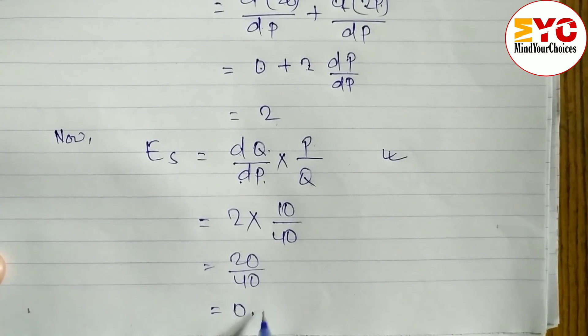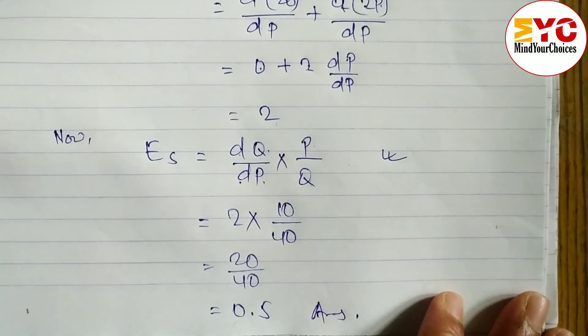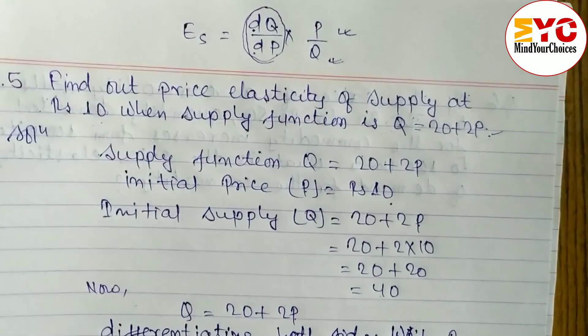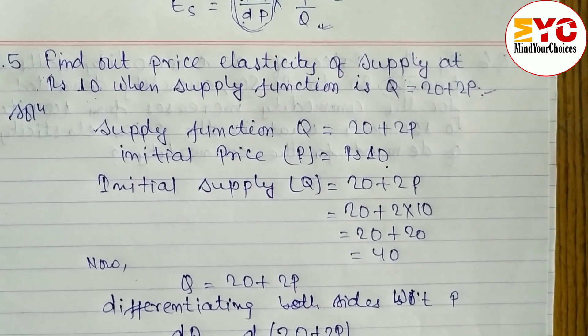So 0.5 is the answer. Hope you understand this video related to price elasticity of supply.